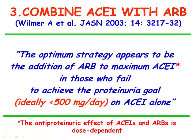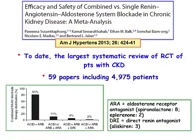Combined ACE inhibitors with ARB: the optimal strategy appears to be the addition of ARB to maximum ACE inhibitor dose in those who fail to achieve the proteinuria goal, which ideally is below 500 mg per day on ACE inhibitors alone. The anti-proteinuric effect of ACE inhibitors and ARB is dose-dependent.